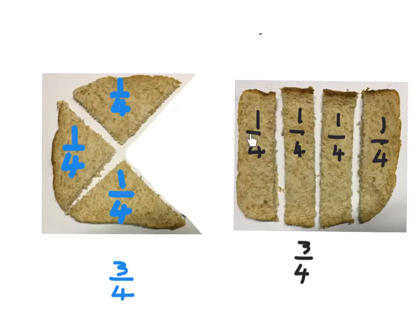You could also have cut the slice in this way. Still, there's going to be four equal pieces, one quarter, one quarter, and one quarter, and if I take this quarter away, it'll still be three quarters.